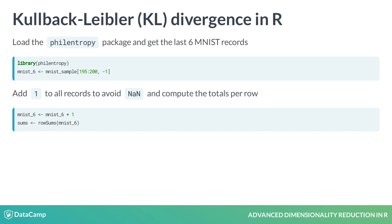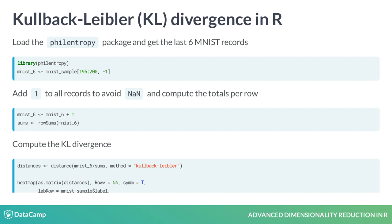First, we add one to all records to avoid getting a NaN while rescaling. Then we get the row sums of each record. Finally, we will compute the KL divergence using the distance function and generate the corresponding heatmap.